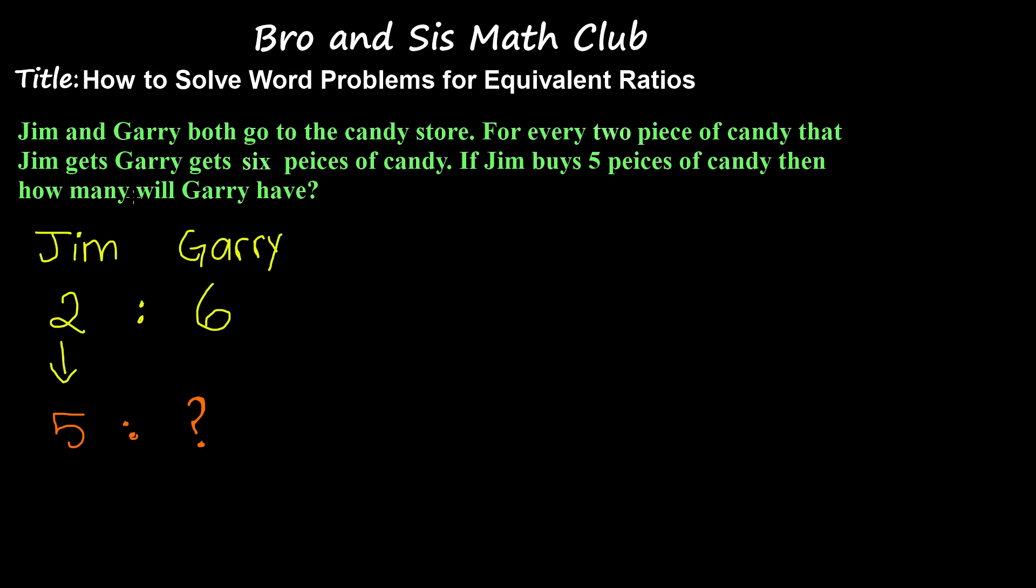So first we have to make the ratios in fraction form. 2 to 6 will become 2 over 6, and 5 to the amount that we don't know will become 5 over a. The a represents a variable for the amount we don't know.